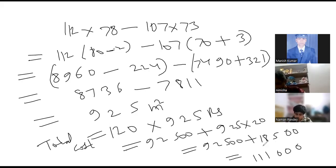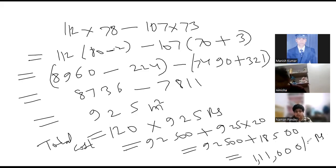So 120 into 925 — that is 1 lakh 11 thousand. Okay, good. Amisha, have you got the same answer? Yes sir.